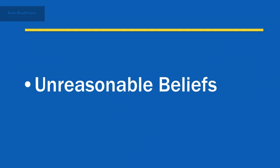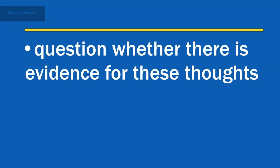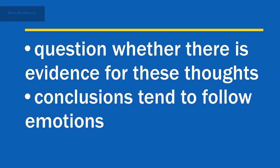Unreasonable beliefs can lead to distorted thoughts. For this reason, the third step of reaching optimal perception is to question whether there is evidence for these thoughts or if they are the result of irrational thinking. A good example is emotive reasoning, where conclusions tend to follow emotions such as suspicion or anger and have little basis in objective reality. So if you think your boss hates you, you should ask yourself why you think this. If there's no objective proof for it, you should dispel that thought.